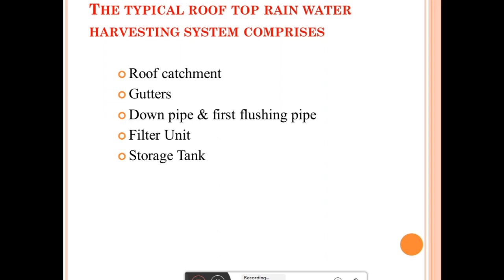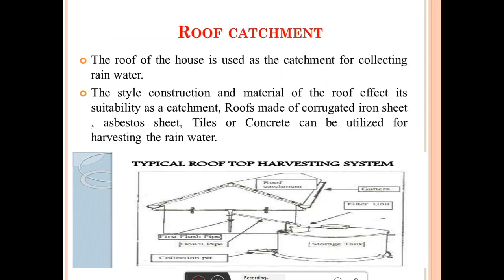There are various components used in the rainwater harvesting system: roof catchment, gutter, down pipe, first flush pipe, filter unit, and storage tank. The first component is the roof catchment — the roof of the house is used as a catchment for collecting rainwater. The style, construction, and material of the roof affects its suitability as a catchment. Roofs made of corrugated iron sheet, asbestos sheet, tiles, or concrete can be utilized for rainwater harvesting.